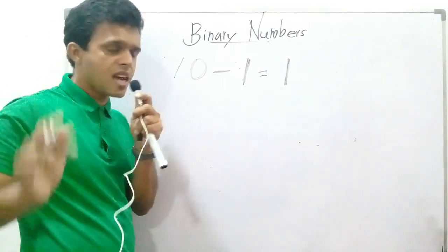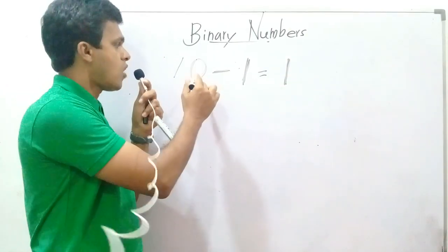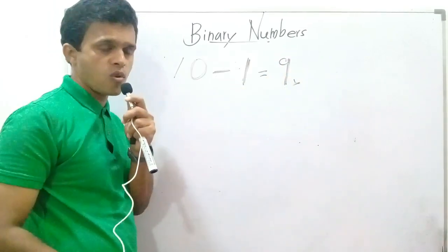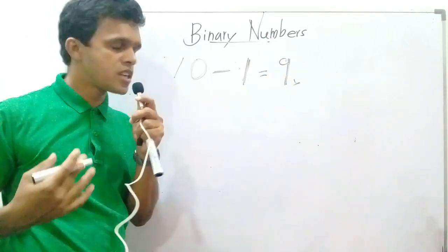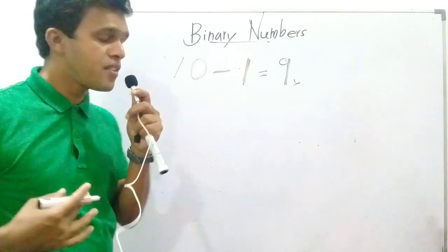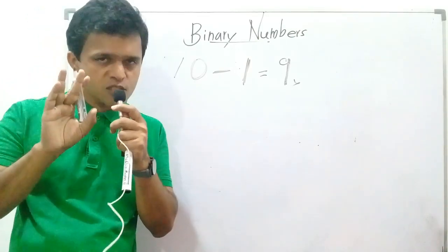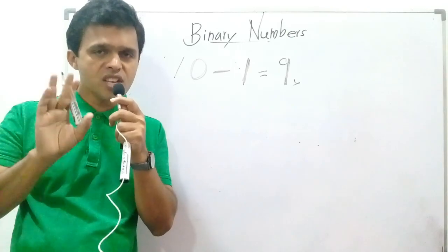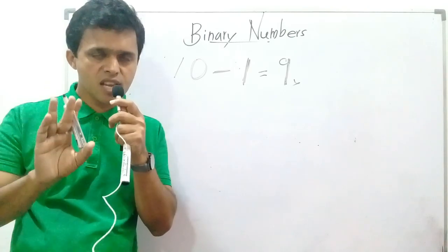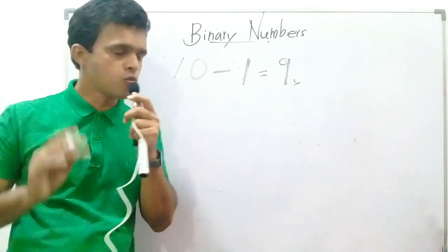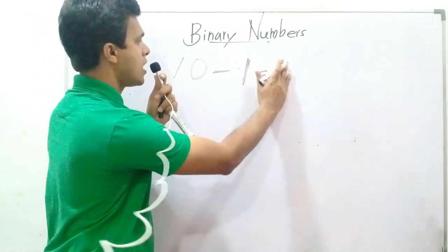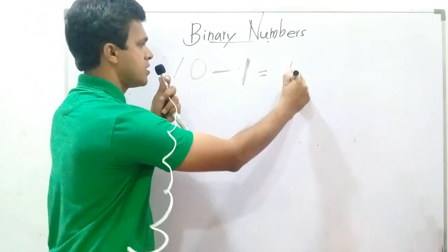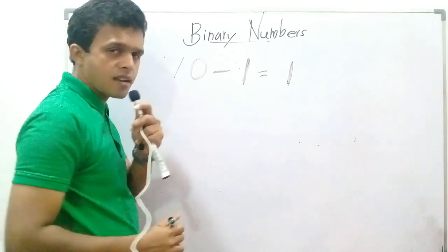We cannot write that 10 minus 1 equals 9. This is wrong. You can simplify that way if the base is 10, but here the base is not 10. The base is 2. So 10 minus 1 equals 1. You have to learn this by heart.